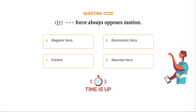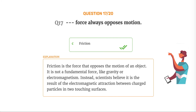The correct answer is Option C: Friction. Friction is the force that opposes the motion of an object. It is not a fundamental force like gravity or electromagnetism. Instead, scientists believe it is the result of the electromagnetic attraction between charged particles in two touching surfaces.